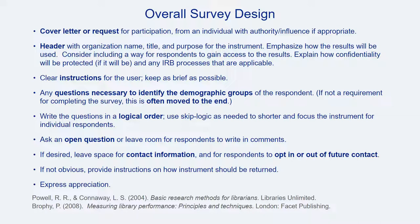A number of elements may increase the likelihood of survey completion by respondents: sending the survey from a respected individual, ideally one familiar to the anticipated survey respondents; ensuring that consent processes are clear and easily understandable; and ensuring that this initial information includes ways the results will be communicated and used to benefit the respondent community. Questions used to identify demographic groups are typically placed at the start or end of a survey, and unless they are necessary for identifying demographic groups, they are commonly moved to the end.